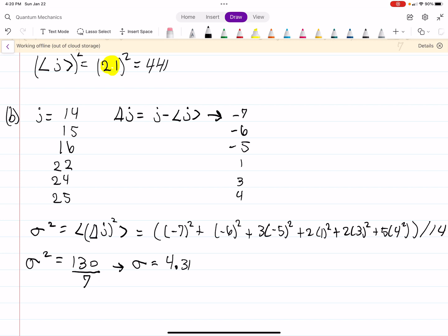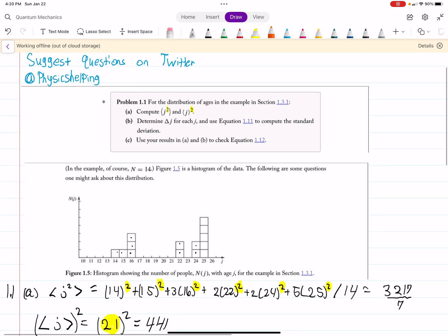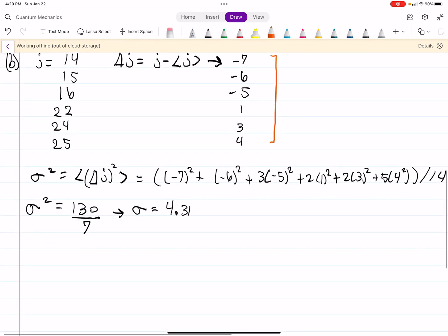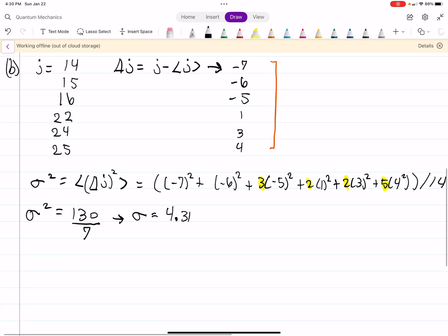So, again, hopefully you see where everything's coming from. We have all of these, which we're squaring. We're multiplying by how many times that pops up. So 16 is 3, 22 is 2, 24 is 2, and 25 is 5. That's why we have these guys up front, in case that was confusing. Okay, so there's our standard deviation.